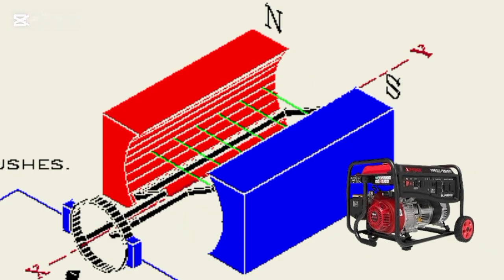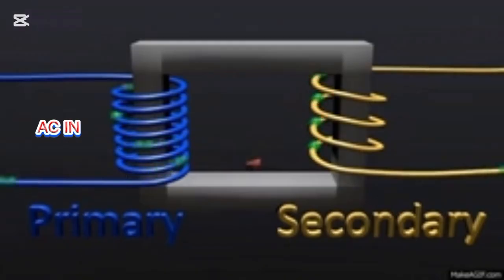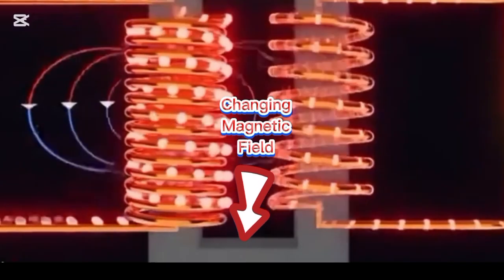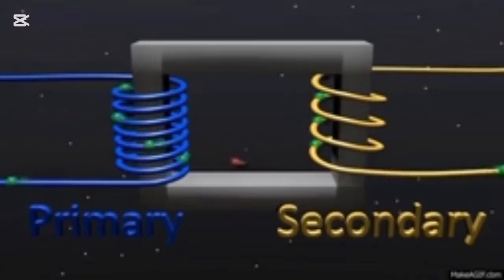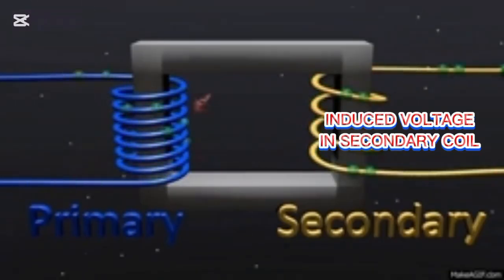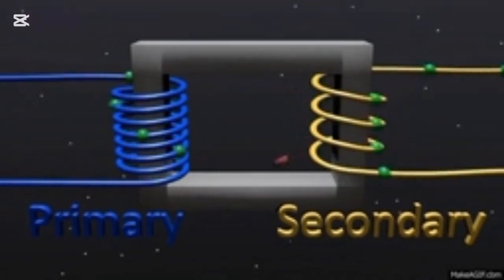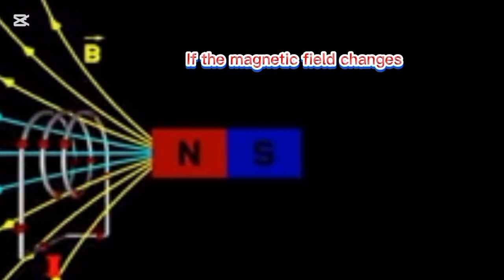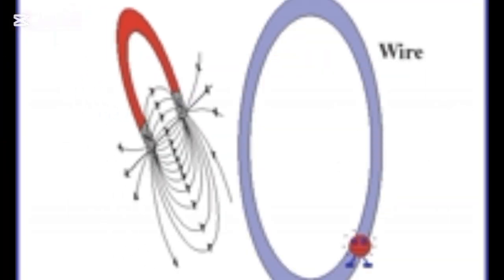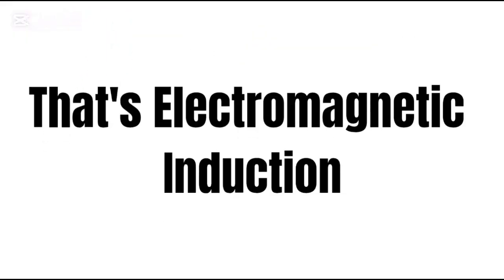This is how generators work, but there's another way. If you send alternating current through a coil, it creates a changing magnetic field even though nothing is moving. That changing field can also induce voltage in a nearby coil. This is how transformers work. So whether it's a moving magnet or alternating current, if the magnetic field changes, voltage is induced. That's electromagnetic induction.